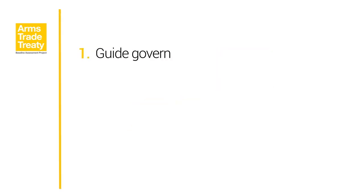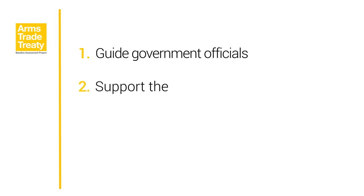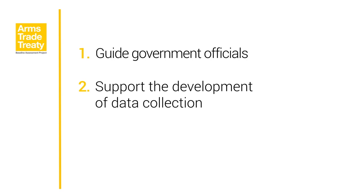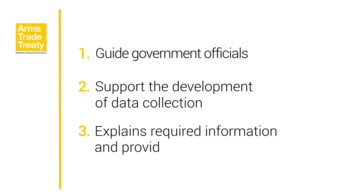This training and tutorial has three benefits. One, it can guide government officials as they prepare their annual reports. Two, it can support the development of good practice for collecting data and compiling export and import information. And three, it explains the minimum information required for reporting conventional arms exports and imports, and provides concrete examples of conventional arms and other military equipment that could be reported.